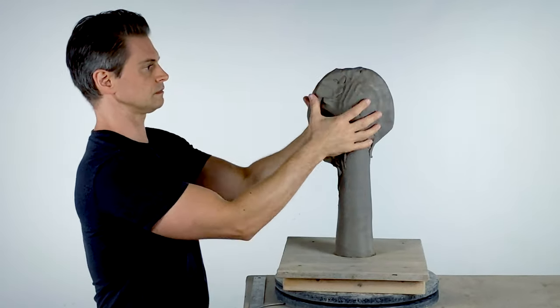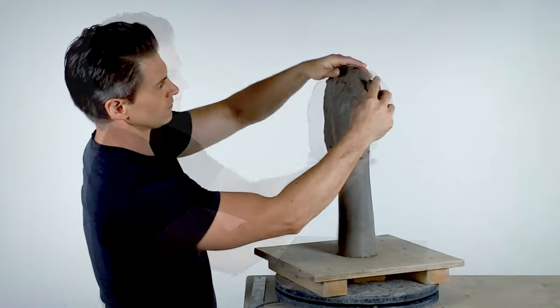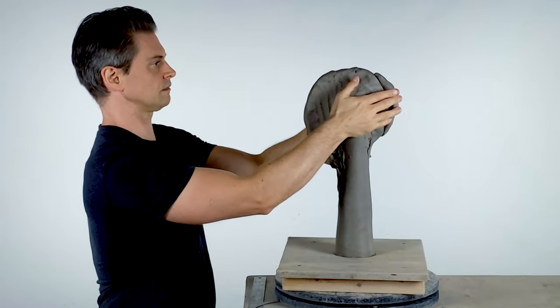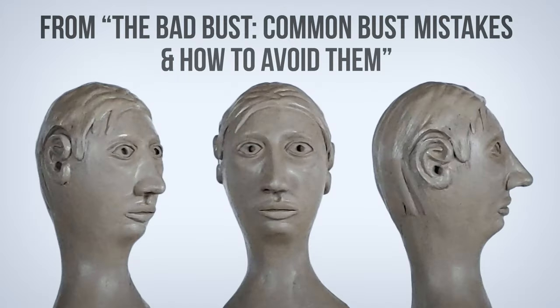Working in profile only, begin shaping the front plane of the face from the chin to the turn of the frontal bone, about at the hairline. Work your way around to the external occipital protuberance. Note that the base of the occipital is about level with the base of the nose. Don't make a lollipop head. See my video, The Bad Bust, on common bust errors.